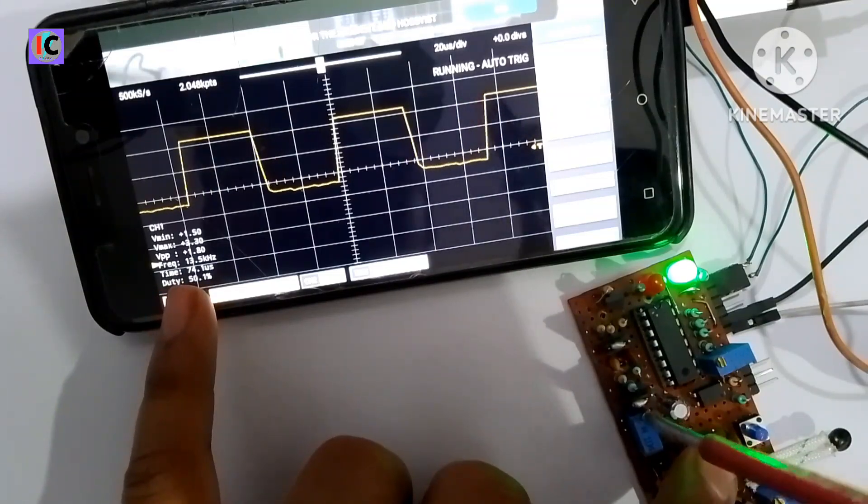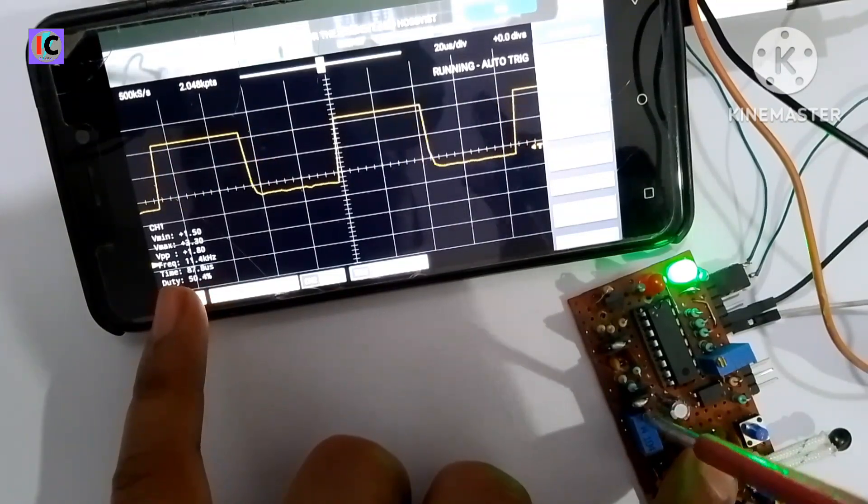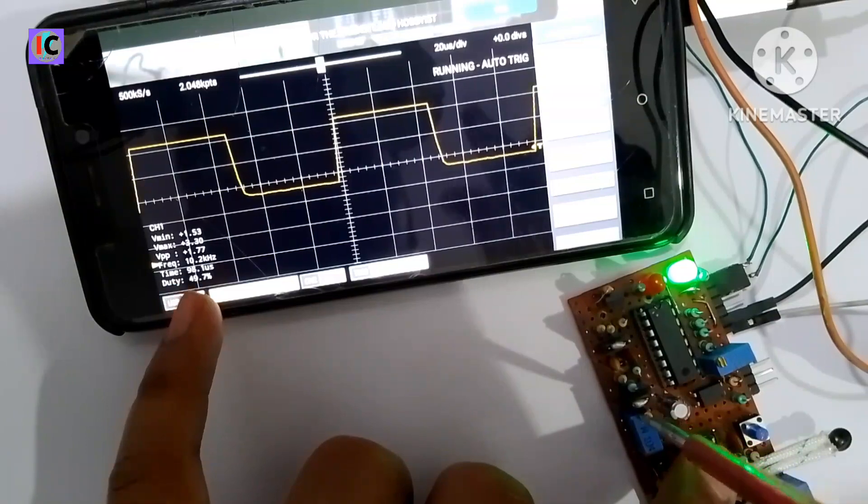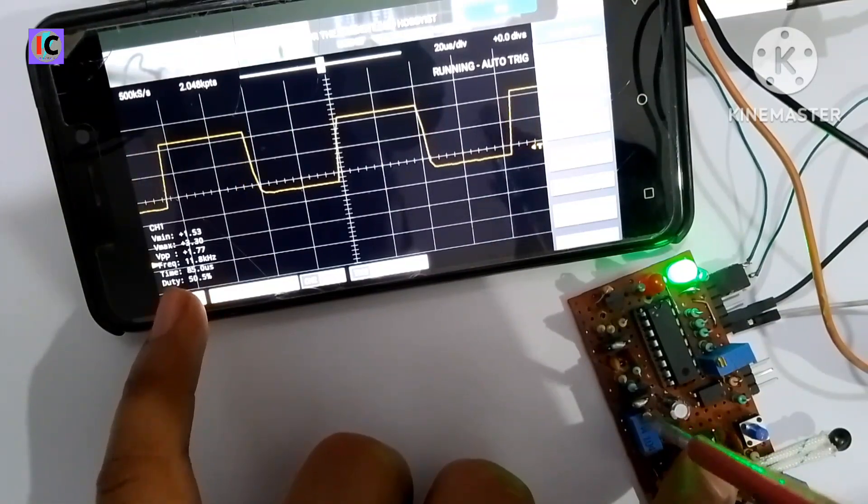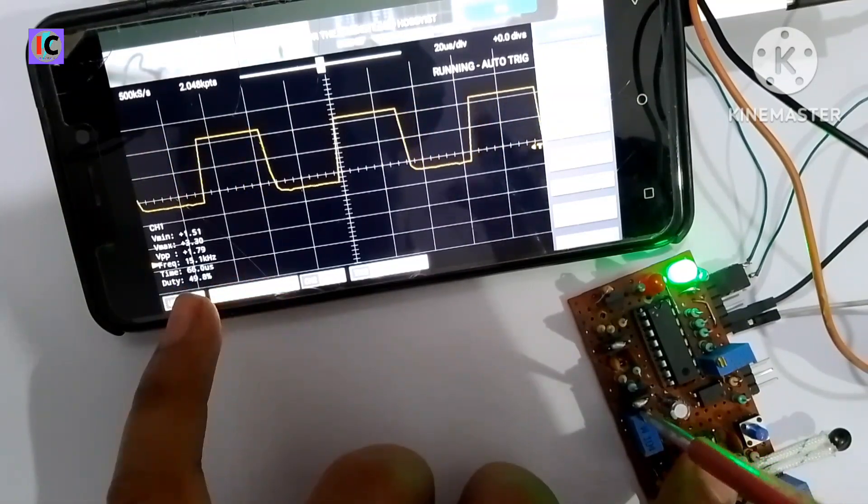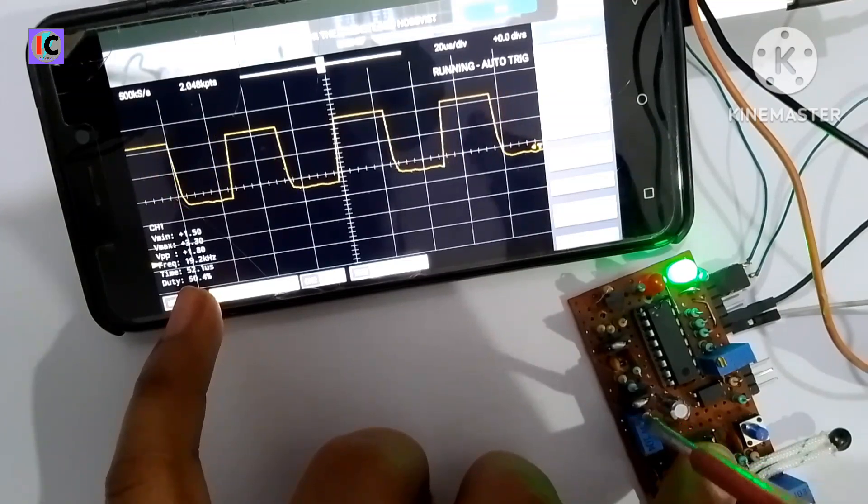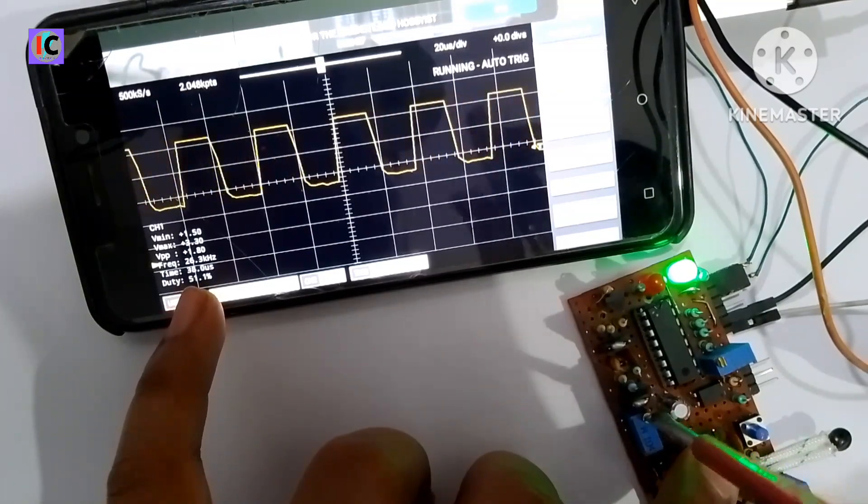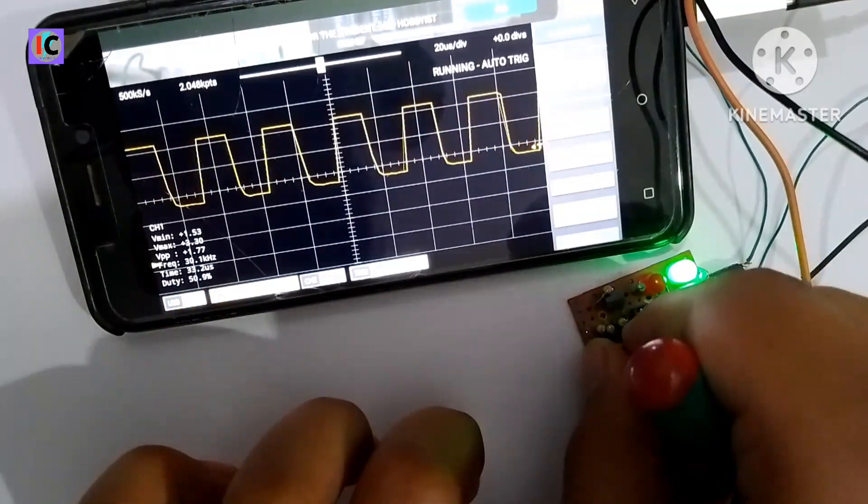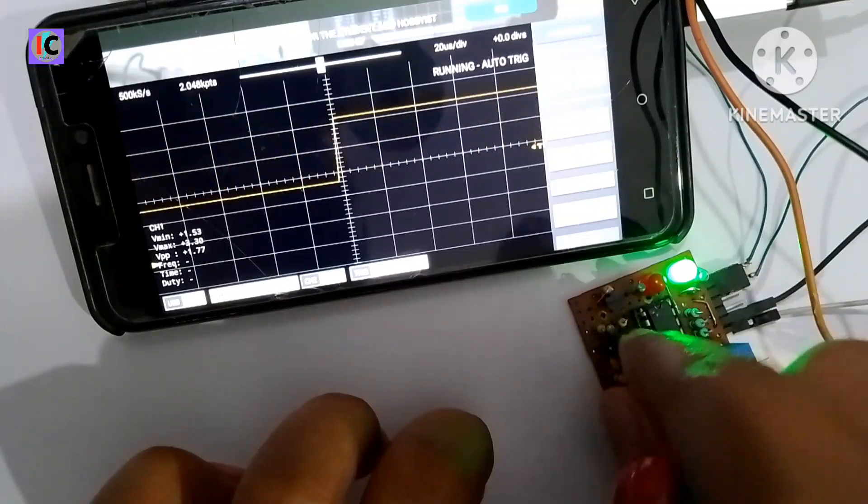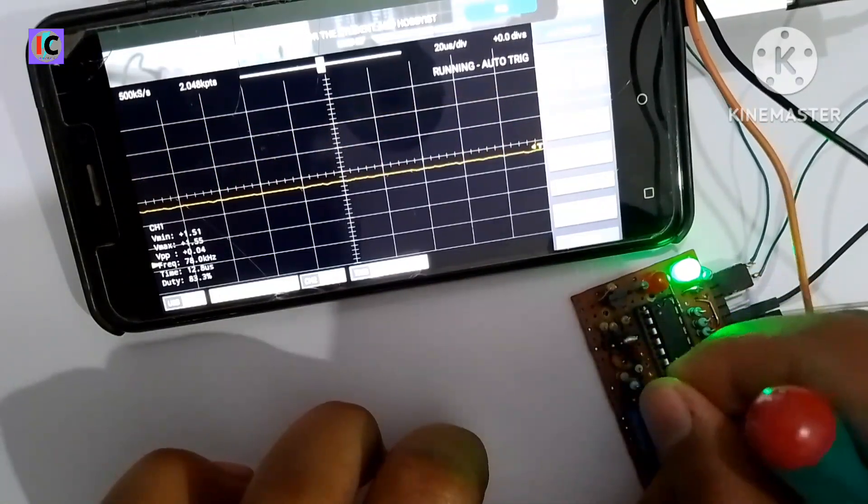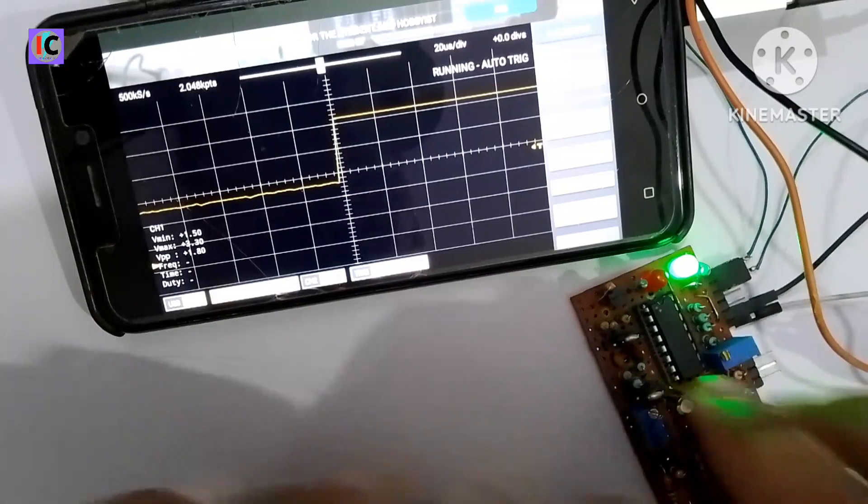Like this you can control the frequency with this potentiometer. Also a jumper is given so that you can adjust more frequency ranges like 50 Hertz.